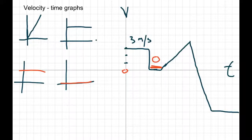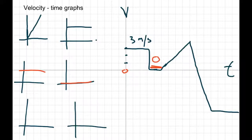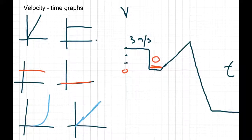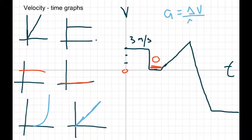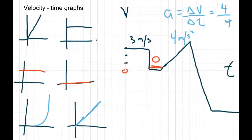The third section is a diagonal line where our velocity is going from zero up to four over four seconds. Just like on distance-time graphs a straight diagonal line represented velocity, on a velocity-time graph a straight diagonal line represents acceleration. On the distance-time graph it was a curve, but here it's a straight line — that's the main difference between the two graphs. For this section, we have a velocity change of 4 m/s over 4 seconds, so rise over run gives us 4 divided by 4, which equals 4 meters per second squared.